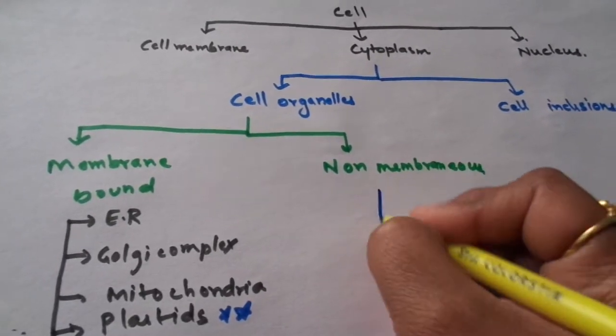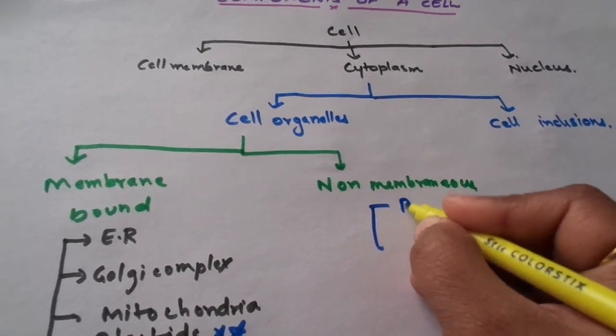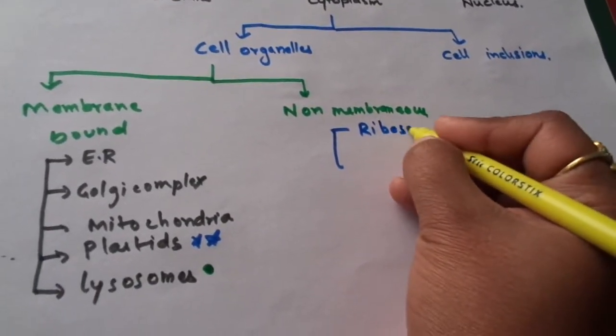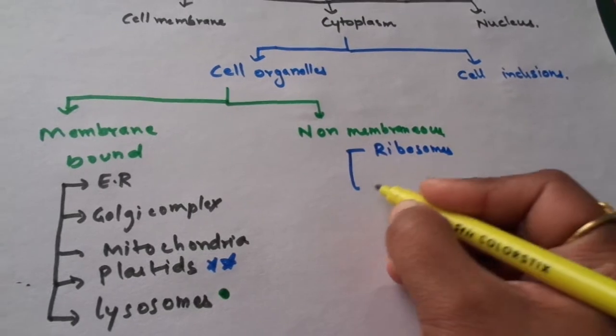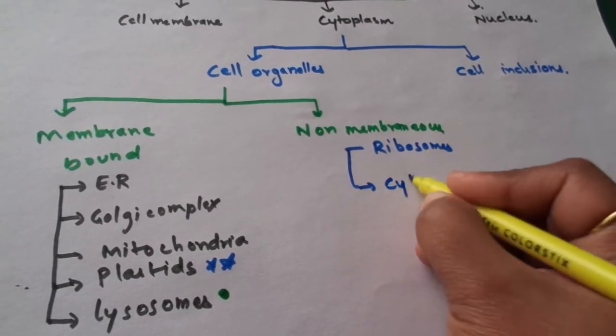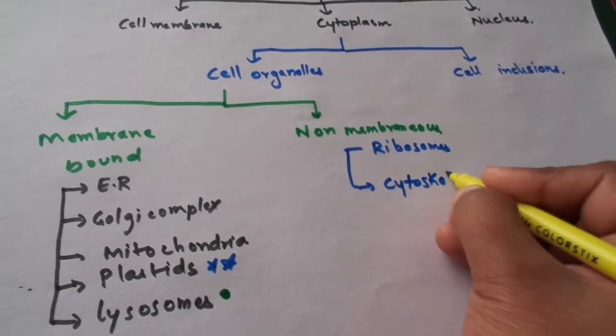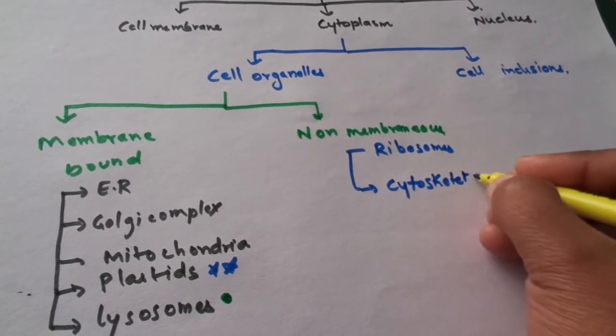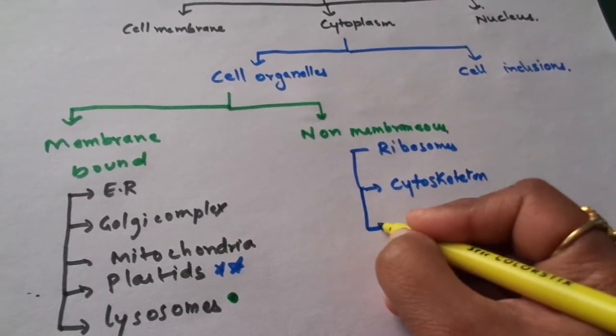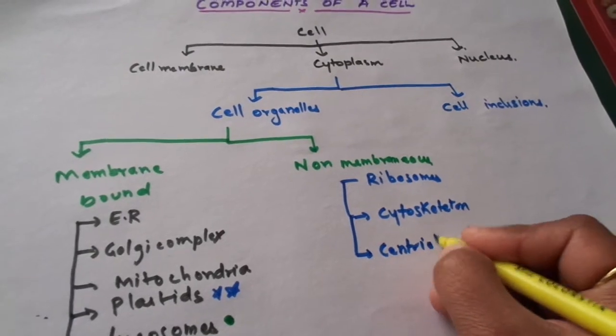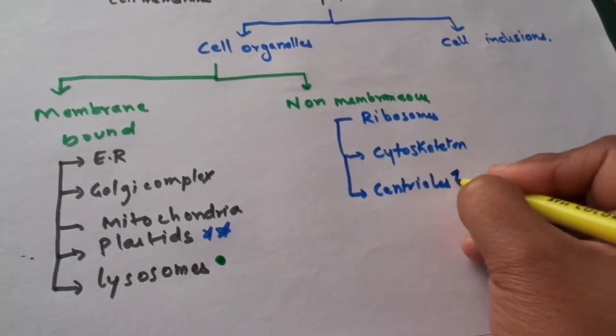The non-membranous organelles are first ribosomes, second is cytoskeleton, and the third one which is exclusively present in animal cells, that is the centrioles.